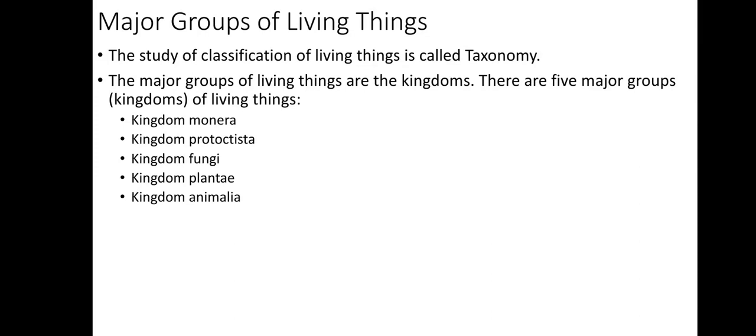In the past video we discussed the concept of classification and the types of classification. We said there are two of them — natural and artificial — whereby we talked about their characteristics, their advantages, and their disadvantages. So today let's see the major groups of living things. First we have to know that the study of classification of living things, or the grouping of living things according to their similarities and differences, is what we call taxonomy.